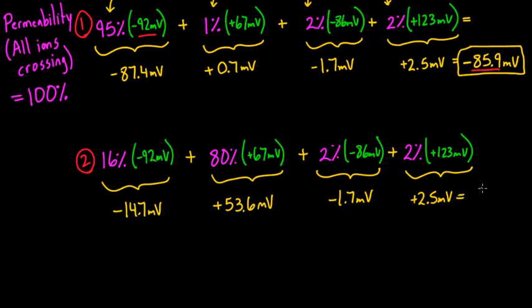If I was to add up these four numbers, my overall permeability was 100%. And my overall membrane potential as a result of that is going to be positive 39.7. So we went from negative 85.9 to positive 39.7. And here the dominant thing was this. You can see how it's starting to approach positive 67 simply because we just had so much of the permeability coming from sodium.